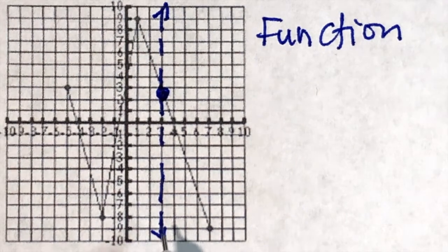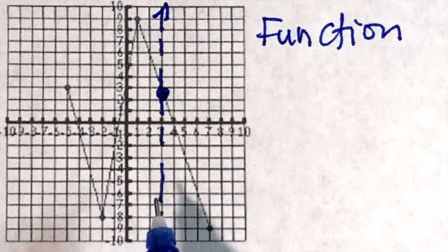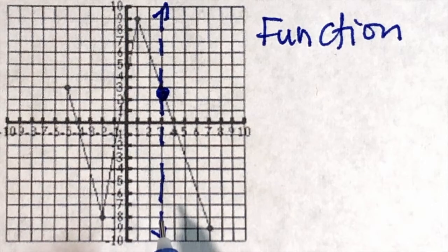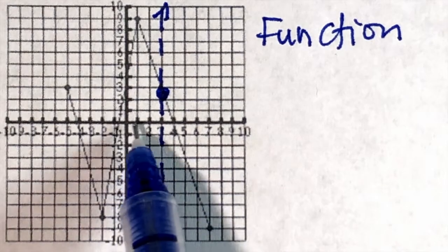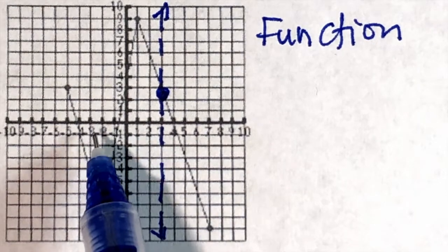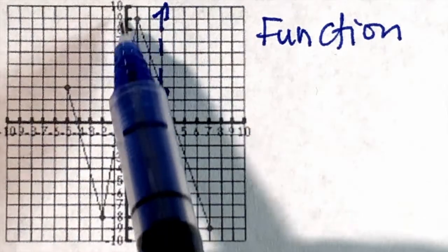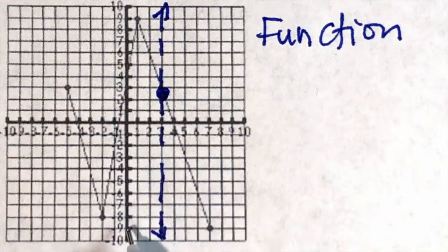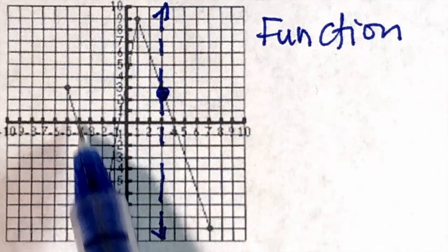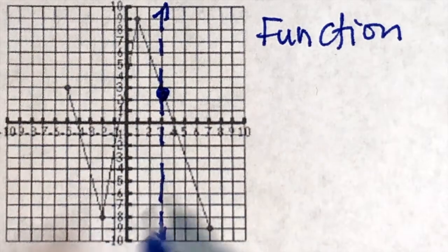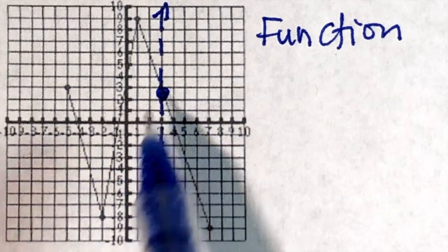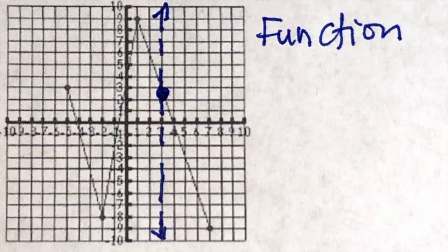Is this the only place we could draw a vertical line? No — you can draw it anywhere, and even in different positions, it will still pass through exactly one point.